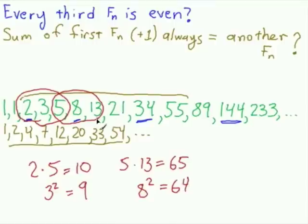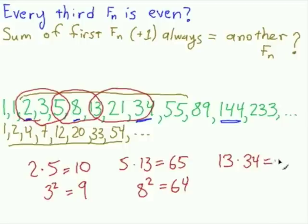Okay, let's try one more example just to see if that pattern seems to be continuing. Let's try 13 times 34, 442. And then the middle number is 21. When I square that, I'm going to get 441. Again, these two numbers are pretty close, off by 1.